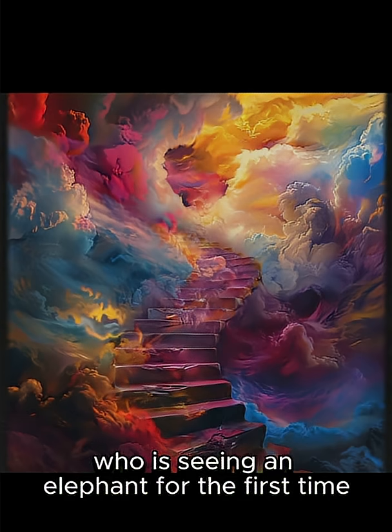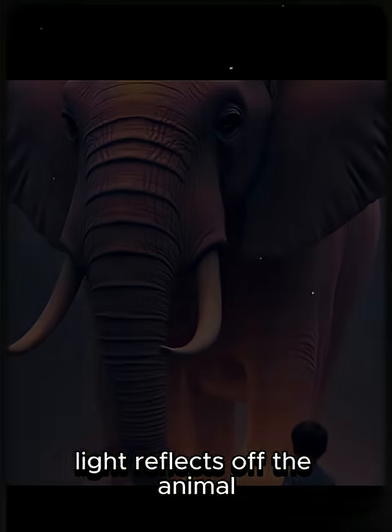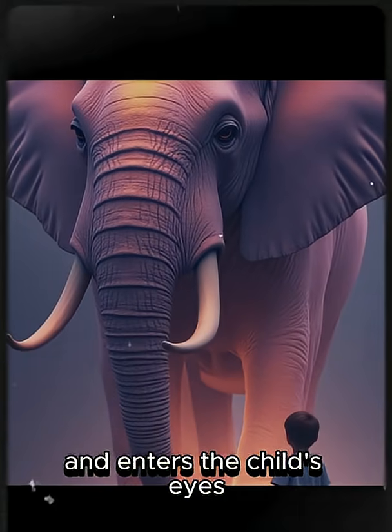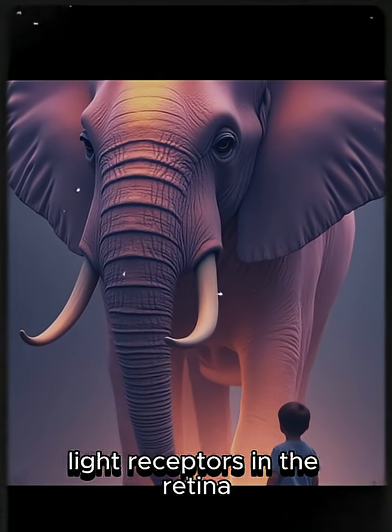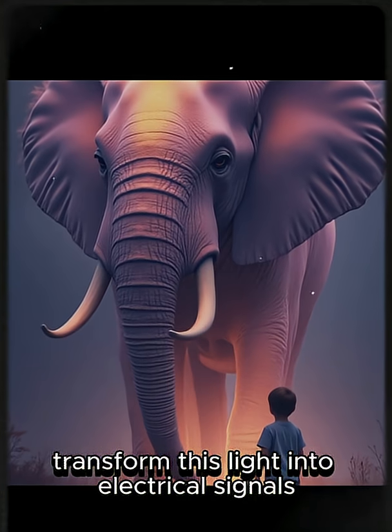Let's take a moment to imagine a child who is seeing an elephant for the first time. Light reflects off the animal and enters the child's eyes. Light receptors in the retina, located at the back of the eye, transform this light into electrical signals.